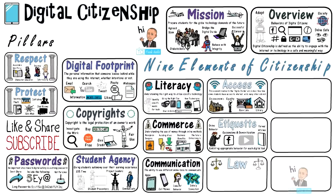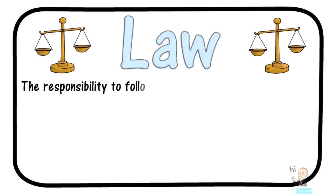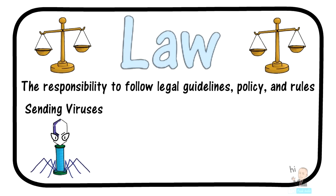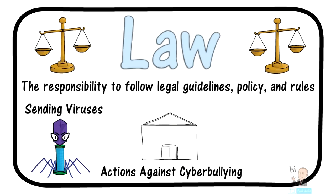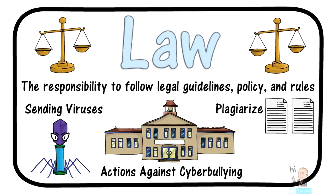Moving along, we come upon digital law. Digital citizens have the responsibility to follow legal guidelines, policies, and rules. For example, you are not allowed to send out viruses or other types of malware to other people. When it comes to school systems, the school itself is legally bound to intervene during any instance of cyberbullying — this goes for bullying that is not online as well. Too often, students plagiarize the work of others. There are also crimes against hacking — for example, hacking a person's email may fall under the Wire Fraud Act.